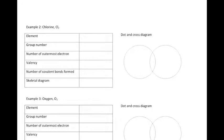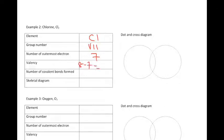Let's see chlorine. The element is Cl. Group number is found in group 7. Number of outermost electrons should be 7. Valency is 8 minus 7, that's 1.